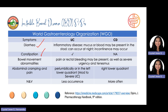For constipation, this may be the primary symptom in ulcerative colitis. When the disease is limited to the rectum, constipation may occur and may proceed to possible bowel obstruction. Next is bowel movement abnormalities — pain and rectal bleeding may be present, as well as severe urgency and tenesmus. Abdominal cramping and pain is exhibited in particular quadrants: for ulcerative colitis it is peri-umbilical or in the left lower quadrant, specifically in moderate to severe cases, while for Crohn's disease it is normally exhibited at the right lower quadrant.